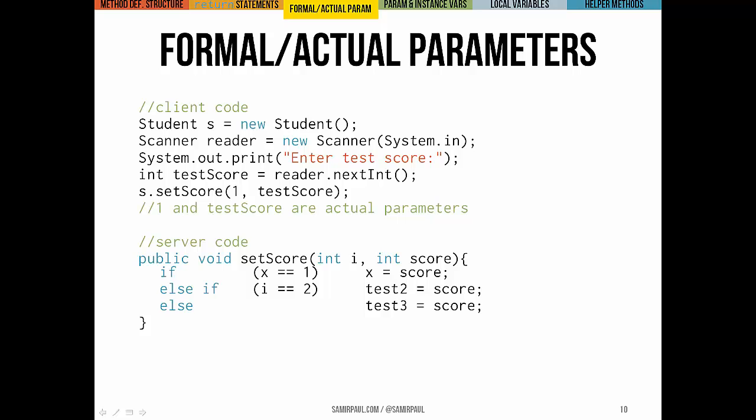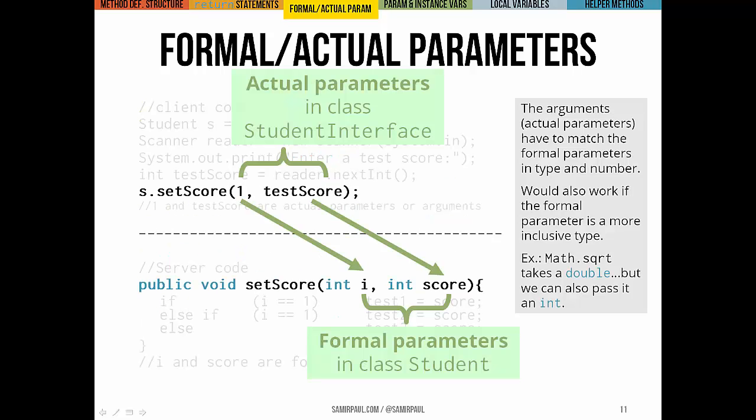Here we can see the setScore method from our student class, and we can see some client code that's creating a student object and getting some input to get a test score, and then actually just inputting that into the setScore method to set the score of the first test. In this case, in our setScore method itself, i and score, we call those formal parameters, those are in the student class.